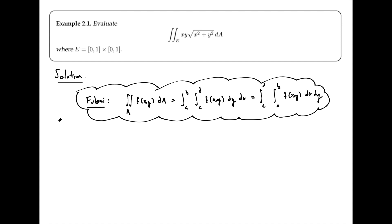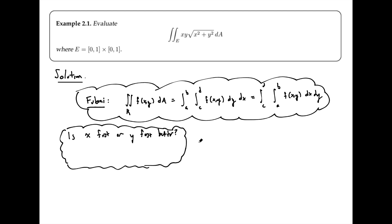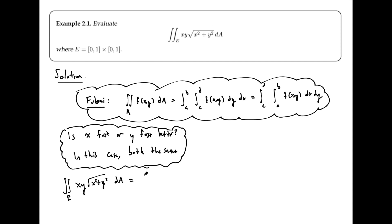A good question when setting up an iterated integral is whether one order is advantageous over the other. This usually comes down to looking at the integrand and asking whether integrating with respect to x or y is easier or impossible. In this case the function is symmetric in x and y, so it doesn't matter — but you could have an example where one order is much easier.